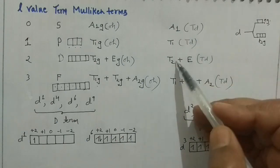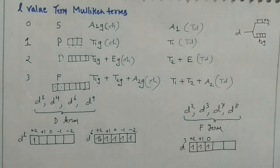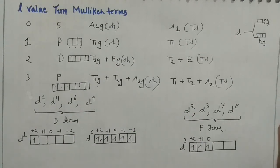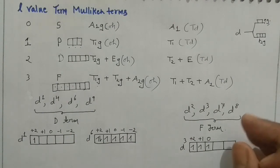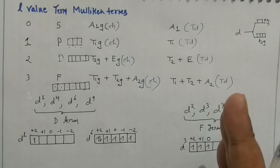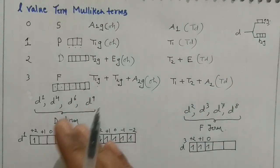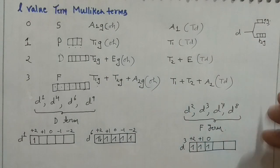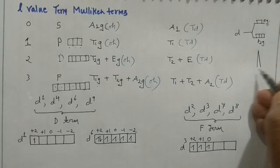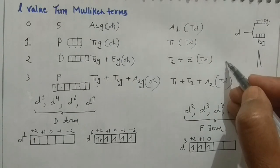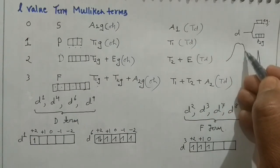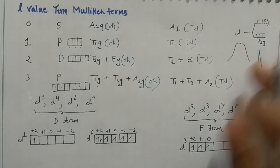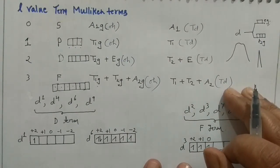Because tetrahedral complexes have no center of symmetry, the Laporte selection rule does not apply there — and the color observed is very sharp. If you compare peaks of octahedral and tetrahedral complexes, the tetrahedral peak is much sharper while the octahedral peak is slightly broad. We will also look at this through a problem later.